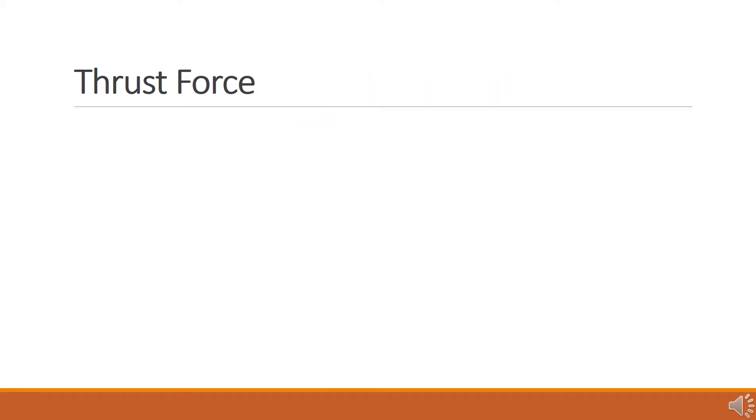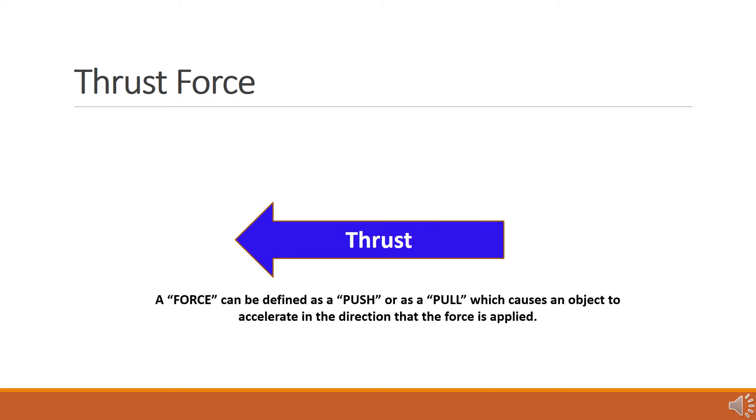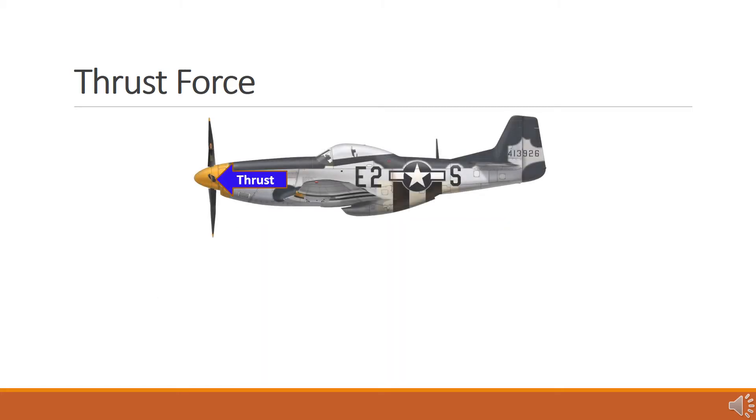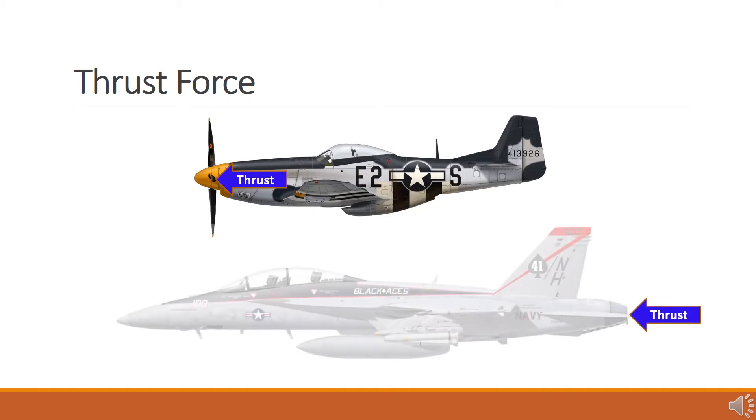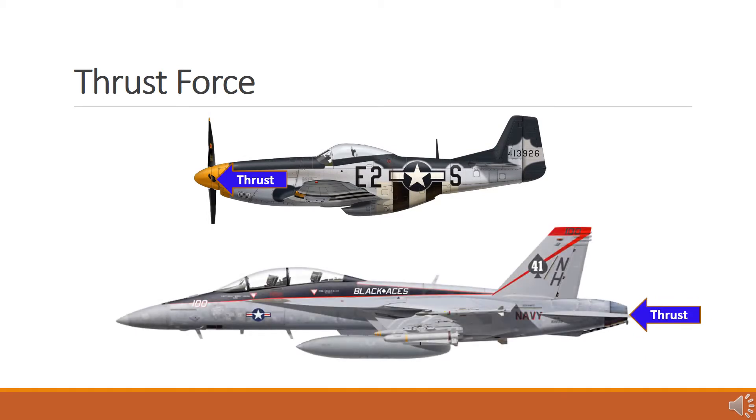Because thrust is a force, it can be represented as a vector quantity having both a magnitude and a direction. When we look at a vector representation of thrust, we would see that it acts in a direction that is the same as the motion of the object. We define a force in simple terms as a push or a pull. In an aircraft, we will be dealing with both as a propeller pulls an aircraft through the air, while a jet engine pushes the aircraft. In this lesson, we will focus on the basic concepts of what thrust is, and in general terms, how thrust is generated.